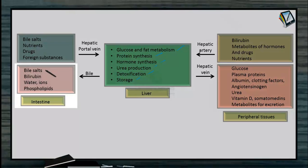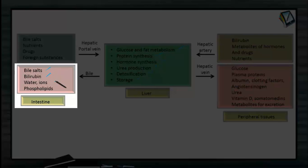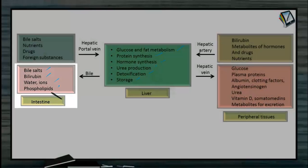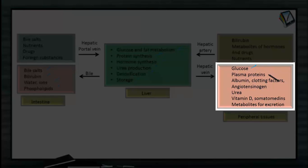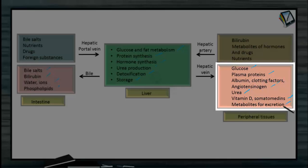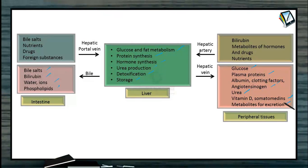Bile includes bile salts, bilirubin, water, ions, and some phospholipids. Blood is collected by the hepatic vein, which carries blood away from the liver toward the heart and opens into the postcaval vein. That blood is rich in glucose, plasma proteins, albumins, clotting factors, angiotensinogen, urea, vitamin D, somatomedins, and metabolites for excretion — all carried toward the heart.